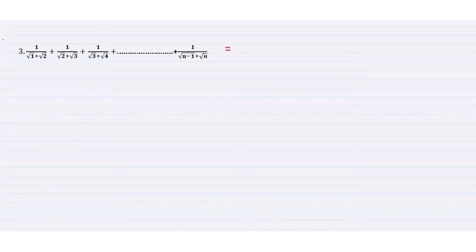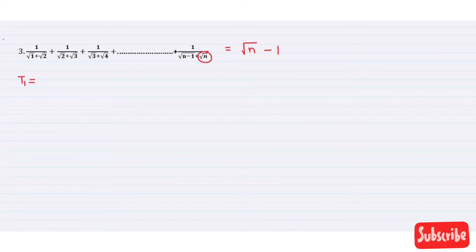Now let's move to the next series: 1/(√1+√2) + 1/(√2+√3) + 1/(√3+√4). You will see that the general term Tr is 1/(√r + √(r+1)). We rationalize it — we multiply numerator and denominator by (√(r+1) − √r).